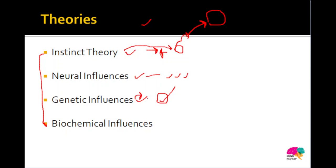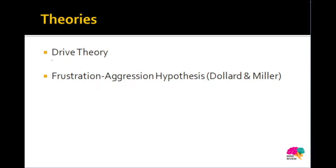There are chances that we can inherit these genes from our ancestors or directly from our parents — that is your genetic influence. Another theory is biochemical influences, which talks about neurotransmitters. Certain neurotransmitters can fuel aggressive tendencies. One is serotonin, and another involves a hormone called testosterone, which is higher in males. Research studies have shown that higher testosterone levels in males are associated with greater aggression, according to the biochemical influences theory.